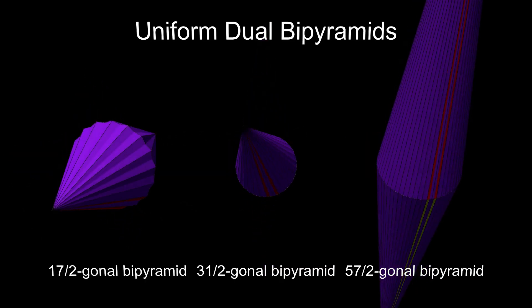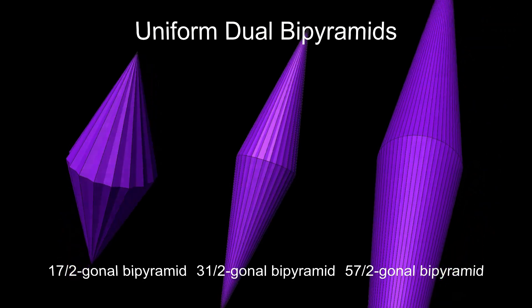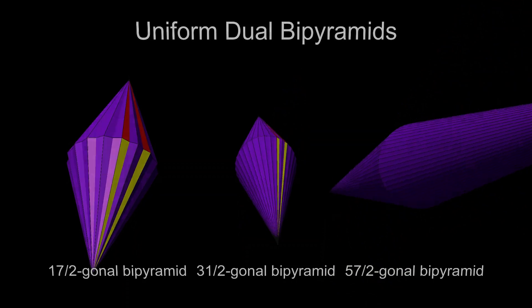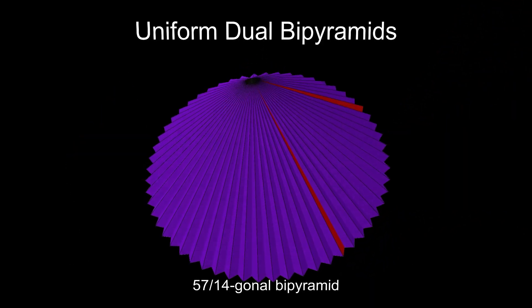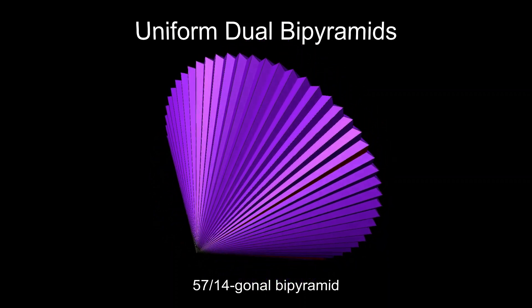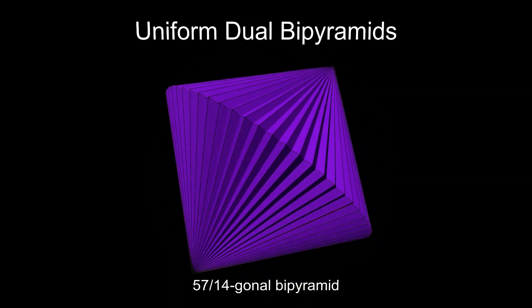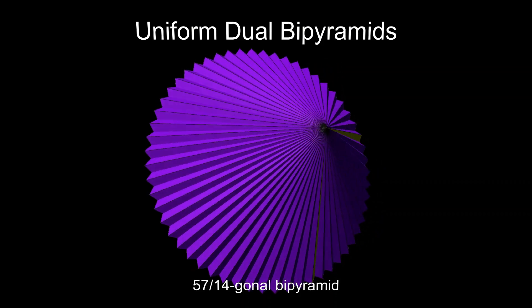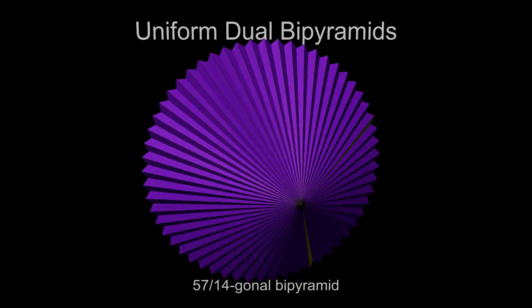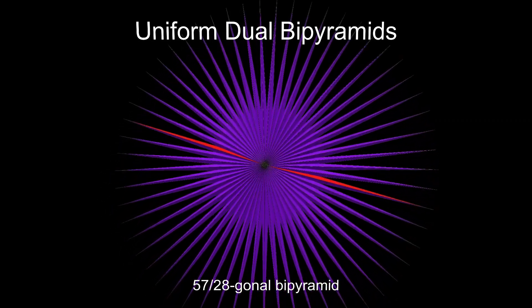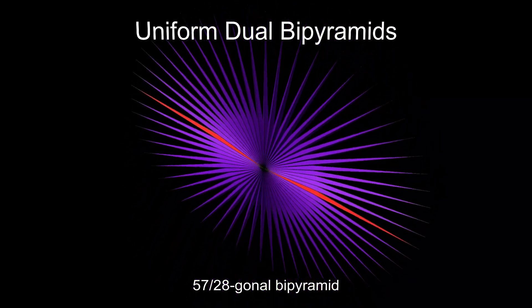If the size gets larger, keeping a low density, the shapes get longer. But if the density increases too, we get a complicated structure, like this 57/14-gonal bipyramid. Each face is almost entirely hidden within the structure, only narrow strips being exposed to view. If the density is very high, we get something like this 57/28-gonal bipyramid, with short, exceptionally wide faces spanning the entire figure.